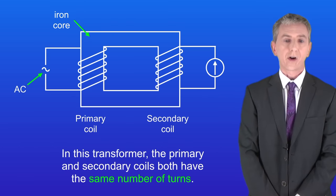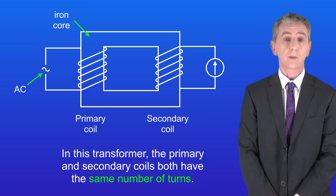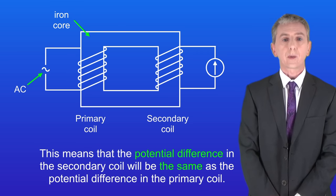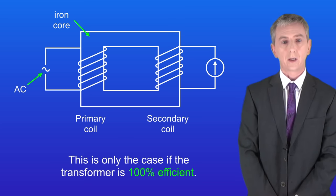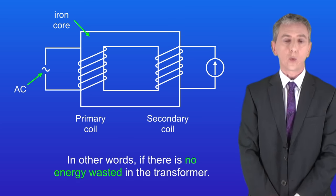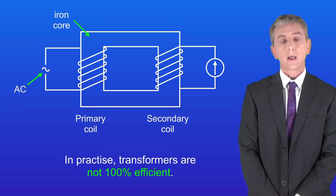In this transformer, the primary and secondary coils both have the same number of turns. This means the potential difference in the secondary coil will be the same as in the primary coil. This is only the case if the transformer is 100% efficient, in other words if there's no energy wasted. In practice, transformers are not 100% efficient.